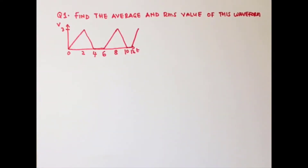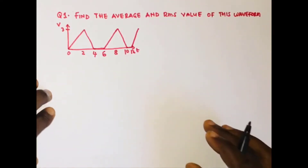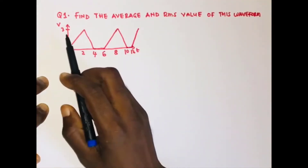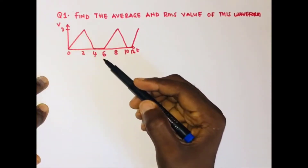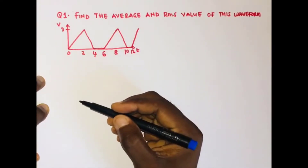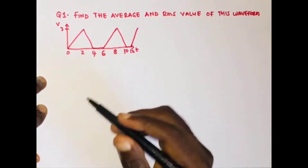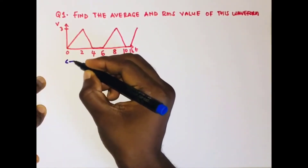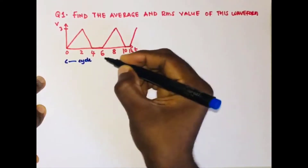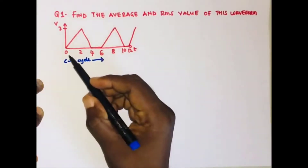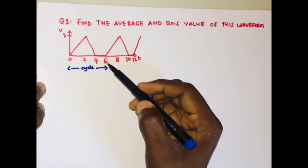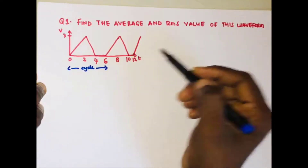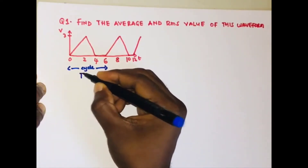Let's solve the first question. We are asked to find the average and RMS values of this waveform. It has an amplitude or peak value of 3, and from 0 to 6 we have a structure which repeats itself from 6 to 12. So for one cycle, the waveform spans from 0 to 6, giving us a period of 6.